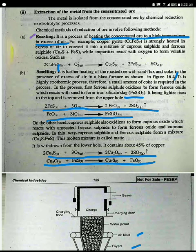Then, on the other hand, copper sulfide also oxidizes to form copper oxide which reacts with unreacted ferrous sulfide to form copper sulfide. In this way, copper sulfide and ferrous sulfide form a mixture. This is called Cu2S.